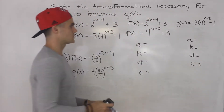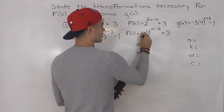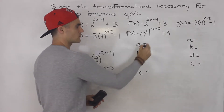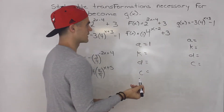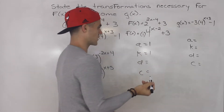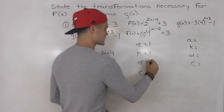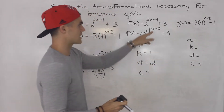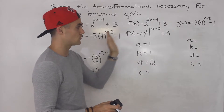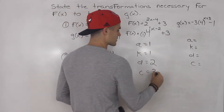For f of x, the a value is 1 — there's like a 1 in front. If it's just a base to an exponent, the a is just 1. The k value — there's like a 1 in front of the x, so that's 1 as well. The d value is positive 2. Remember it's always the opposite sign, so this x minus 2 means we shift 4 to the power of x, the parent function, 2 to the right. And then the c value is just 3.